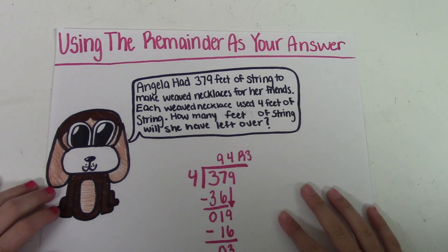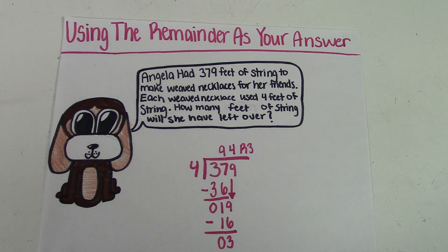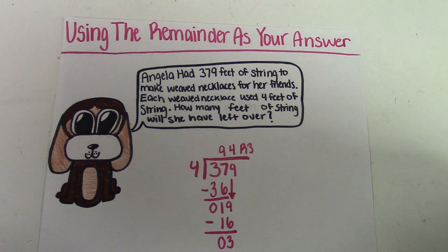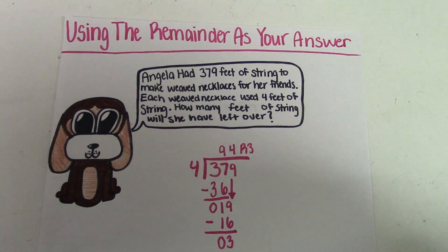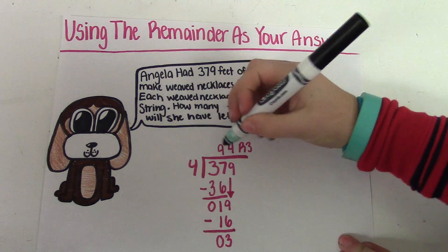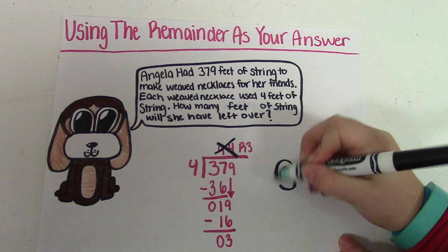Strategy two: using the remainder as your answer. Angela had 379 feet of string to make weave necklaces for her friends. Each weave necklace used 4 feet of string. How many feet of string will she have left over? I've already solved the problem and got the answer of 94 with a remainder of 3. Let's look at the clue words: 'will she have left over?' So I'm going to cross out this answer and use the remainder, 3, as my answer.